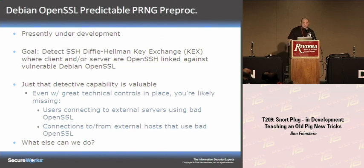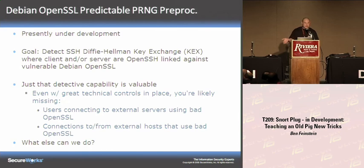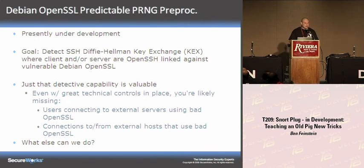Our preprocessor is a detection preprocessor. It looks at the Diffie-Hellman key exchange between the two SSH peers and attempts to brute-force the random values generated if one or both parties was using the bad Debian OpenSSL random number generator. It has a detective capability right now. In the near future I hope to release code that takes this to the next step as a normalization preprocessor that will decode the whole stream — but it's not ready yet.